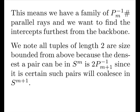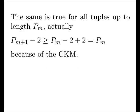We note all tuples of length 2 are size bounded from above, because the densest a pair can be in any iteration is the next prime minus 1 times 2. Since it is certain, such pairs will coalesce in the next iteration. The same is true for all tuples up to the length of our current prime. Actually, our next prime minus 2, which is greater than our current prime, because of the CKM.